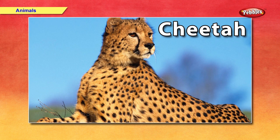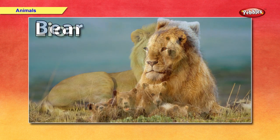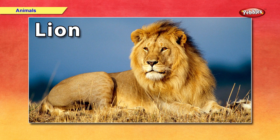Cheetah — a cheetah has beautiful yellow spots on his body. It can run very, very fast. It is a wild animal. Bear — a bear has long thick hair on his body. It is a wild animal. Lion — a lion is called the king of the jungle. A male lion has a beautiful mane around his neck. Lion is a wild animal.